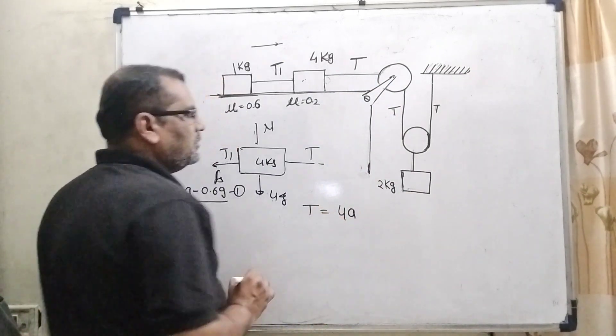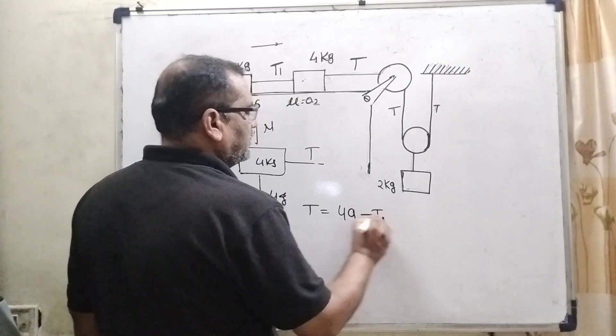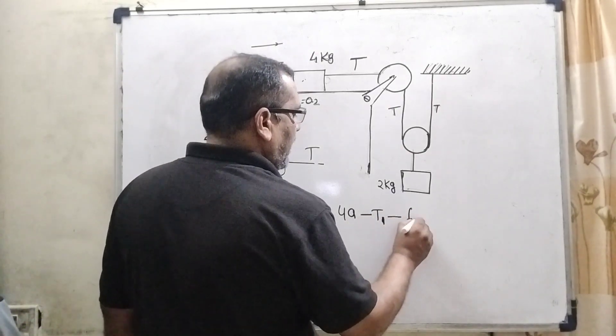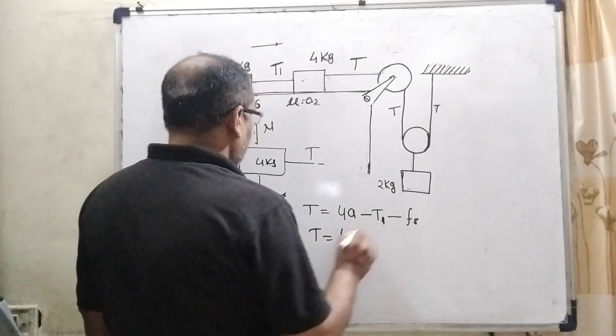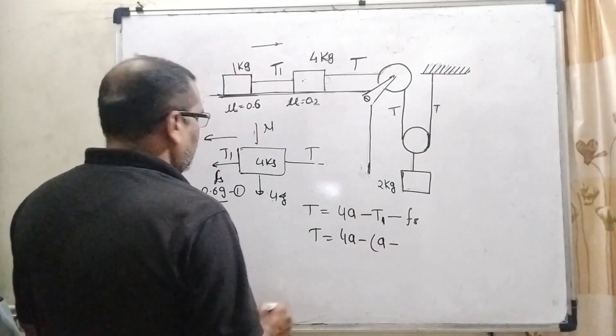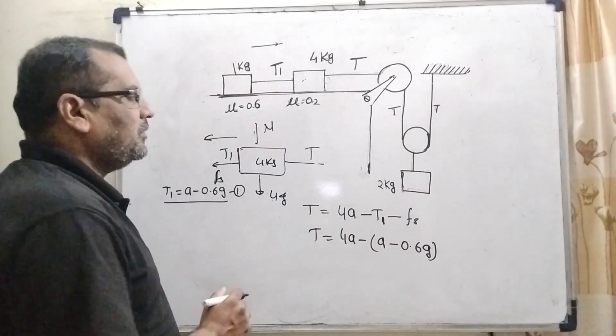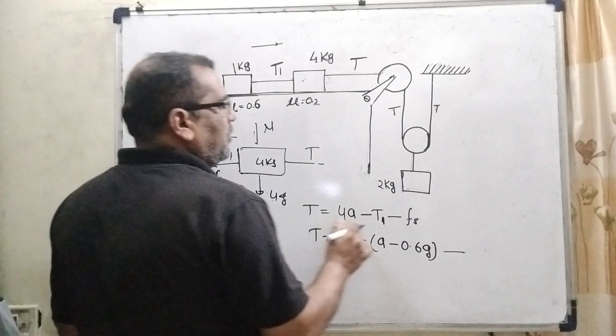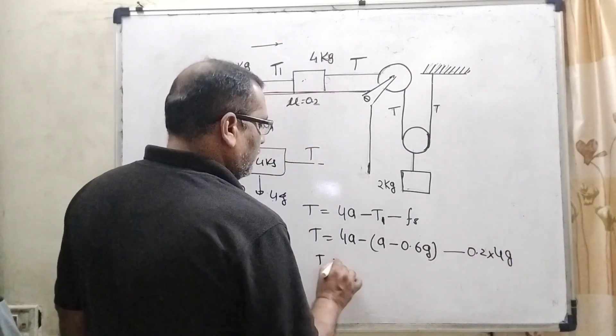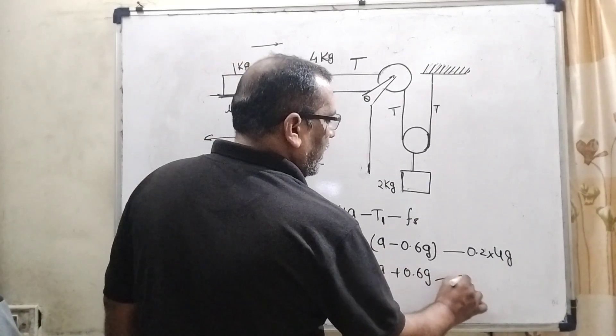So T equal to accelerated towards to the right side. So therefore 4 A and here the T1 opposite to the motion. So therefore minus T1 and friction also acting towards to the left side. So therefore again we have using Fs. So T equal to 4a here from the first equation we have substitute the value of T1 that is a minus 0.6 g that is the T1 and Fs friction force here the mu is 0.2 and m that is 4 and g. So T equal to 4a minus a minus minus plus 0.6 g minus 0.8 g.